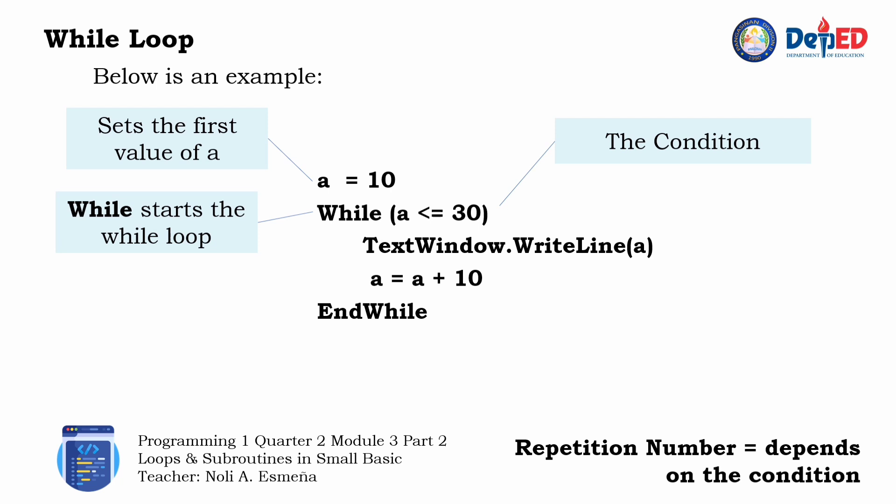This line of code is basically saying that while the value of a is less than or equal to 30, the loop will continue. The next two lines of code describes what will happen on each loop. The first event is to display the current value of a on each loop. After the value is printed, 10 will be added to the value and the loop will repeat once again, as long as the condition is true.